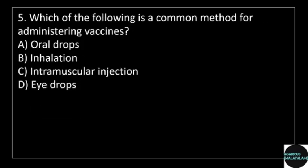5th question: which of the following is a common method for administering vaccines? Answer options: option A, oral drops; option B, inhalation; option C, intramuscular injection; option D, eye drops.